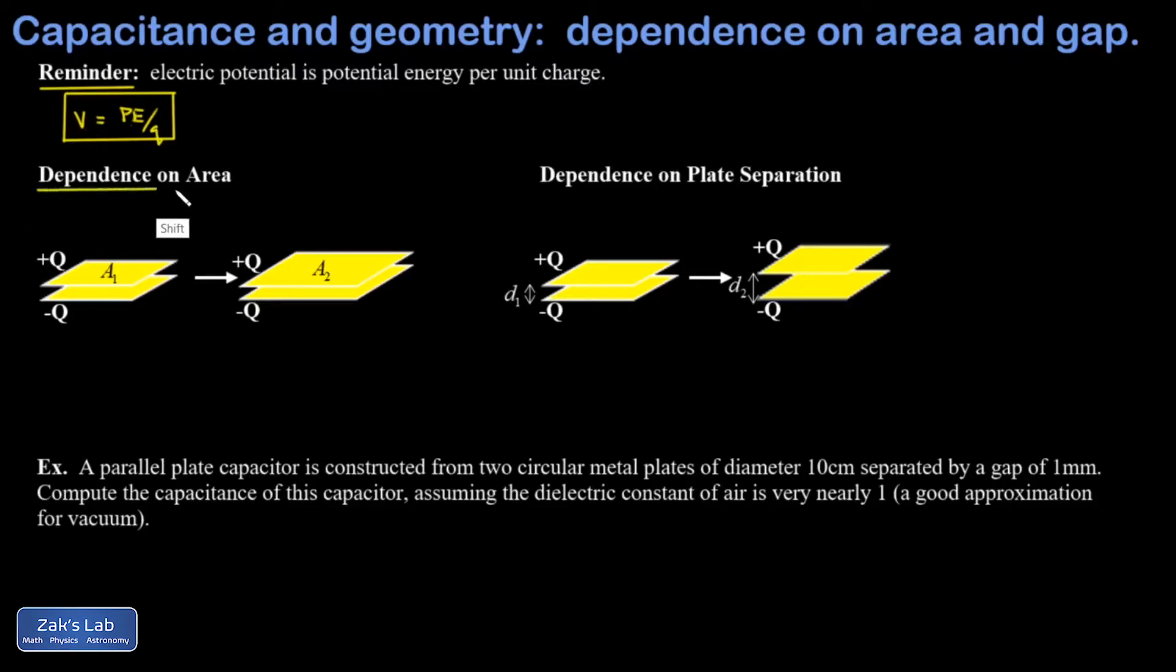In my first experiment I'm looking at the dependence on area, and so I'm just asking myself what happens to the potential energy if I stretch out these plates and make their area way bigger. Well that means the like charges on the plates are able to spread out and the potential energy goes down, and that means the potential difference, the voltage between the plates, is going to go down.